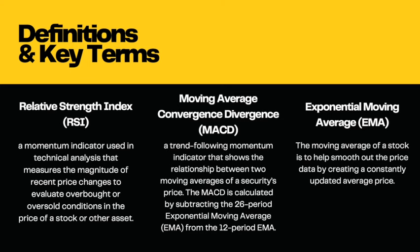Some basic technical indicators we use daily are the RSI — Relative Strength Index — the MACD, which stands for Moving Average Convergence Divergence (but everyone just calls it MACD), and Exponential Moving Averages or EMAs. The reason we like EMAs is they give you quicker price action than standard moving averages. RSI, MACD, and EMAs are what we use on a daily basis to help determine which stocks and which options we're potentially going to buy based on what these indicators are telling us.